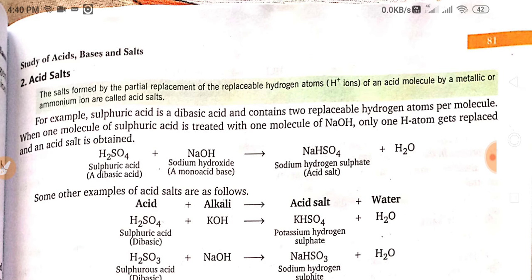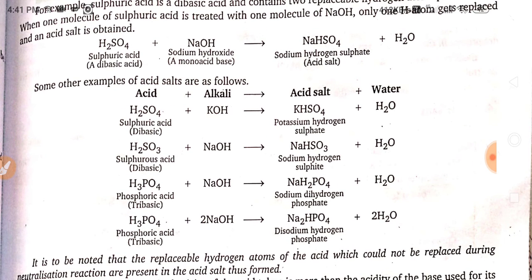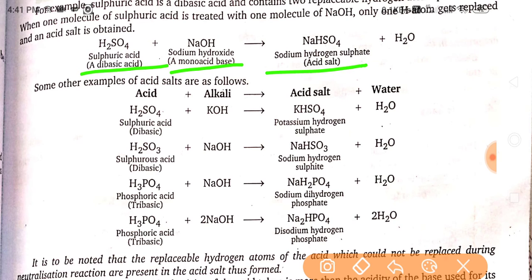Acid salts are salts formed by the partial replacement of the replaceable hydrogen ion of an acid molecule by a metallic or ammonium ion. It means the hydrogen ions are only partially, not completely, replaced. For example, sulfuric acid, a dibasic acid, reacted with sodium hydroxide forms sodium hydrogen sulfate — this is an acid salt. Only one hydrogen atom is replaced, not all hydrogen ions.